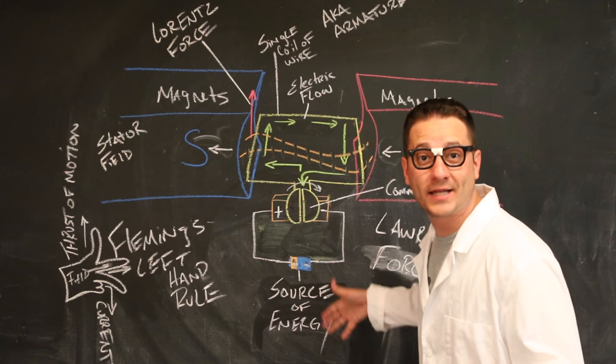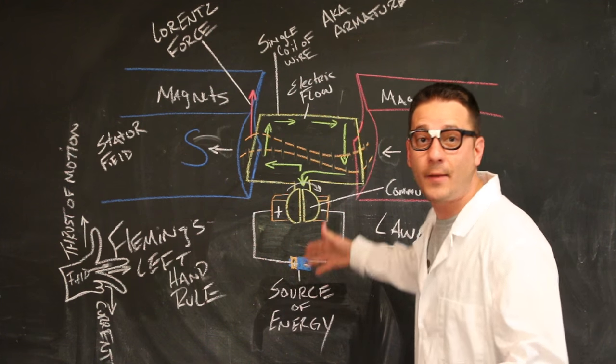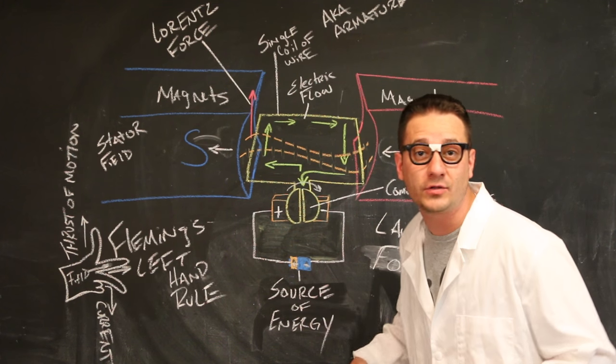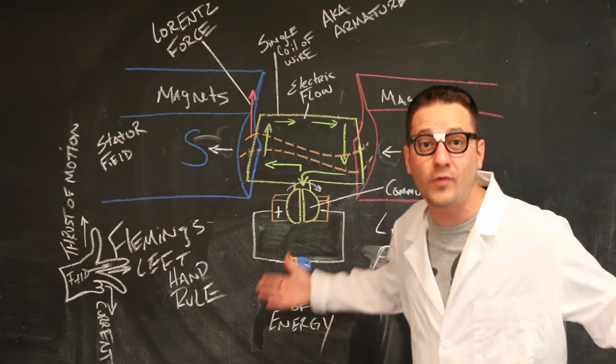As electric current supplies externally to the commutator ring, the commutator ring reverses the current each half cycle to keep the torque turning the coil in the same direction.